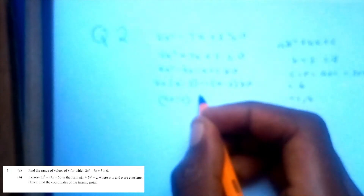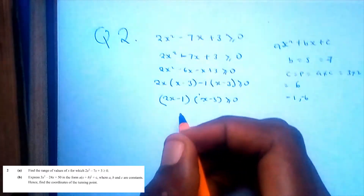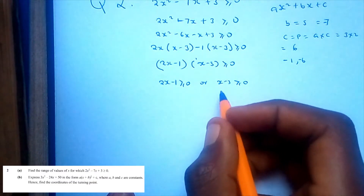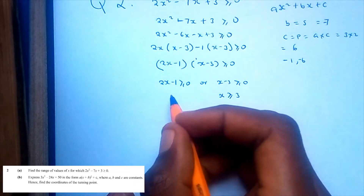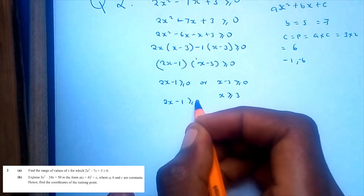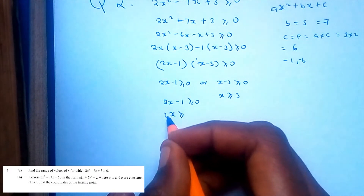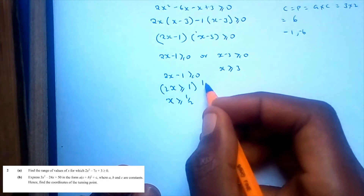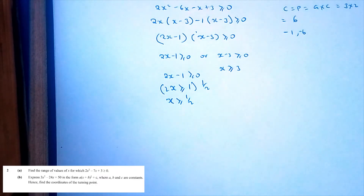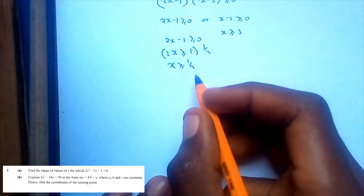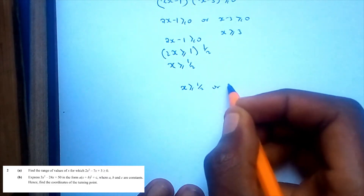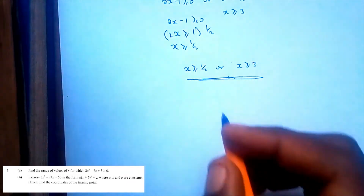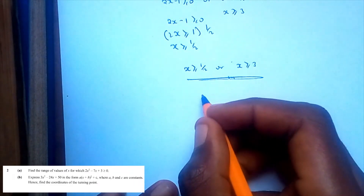This gives (2x - 1)(x - 3) ≥ 0, so 2x - 1 ≥ 0 or x - 3 ≥ 0. Solving these: x ≥ 1/2 or x ≥ 3. So the range of values is x ≥ 1/2.